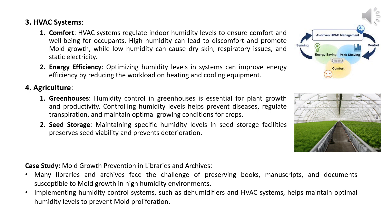The third application is HVAC systems, which regulate indoor humidity levels to ensure comfort and well-being for occupants. High humidity can lead to discomfort and promote mold growth, while low humidity can cause dry skin, respiratory issues, and static electricity. Optimizing humidity levels in HVAC systems can also improve energy efficiency by reducing the workload on heating and cooling equipment. The fourth application is agriculture: in greenhouses, humidity control is essential for plant growth and productivity, while in seed storage facilities, maintaining specific humidity levels preserves seed viability and prevents deterioration.